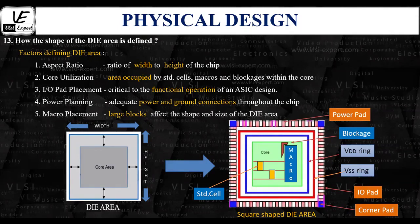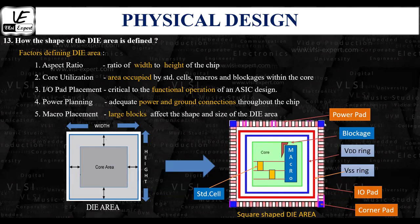A third factor defining the die area is IO pad placement. The placement of IO pads is critical to the functional operation of the entire design because these pads serve as the interface between the chip and the external world. They allow the design to operate at different voltages by facilitating voltage level shifting. Designers must strategically place these IO pads to eliminate issues like electromigration and current switching related problems.